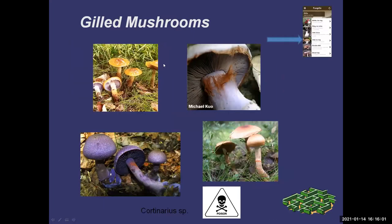Another group of gilled mushrooms I nickname Cortinarius. They have a cortina — a spider-like webbing. They used to have a veil that protected the gills and then the veil breaks, leaving the cortina. So when you're picking mushrooms, look very carefully at the gills — are there any little threads attached to the margins of the cap? That would tell you it's a Cortinarius, because most in this family are poisonous. Just avoid them all.